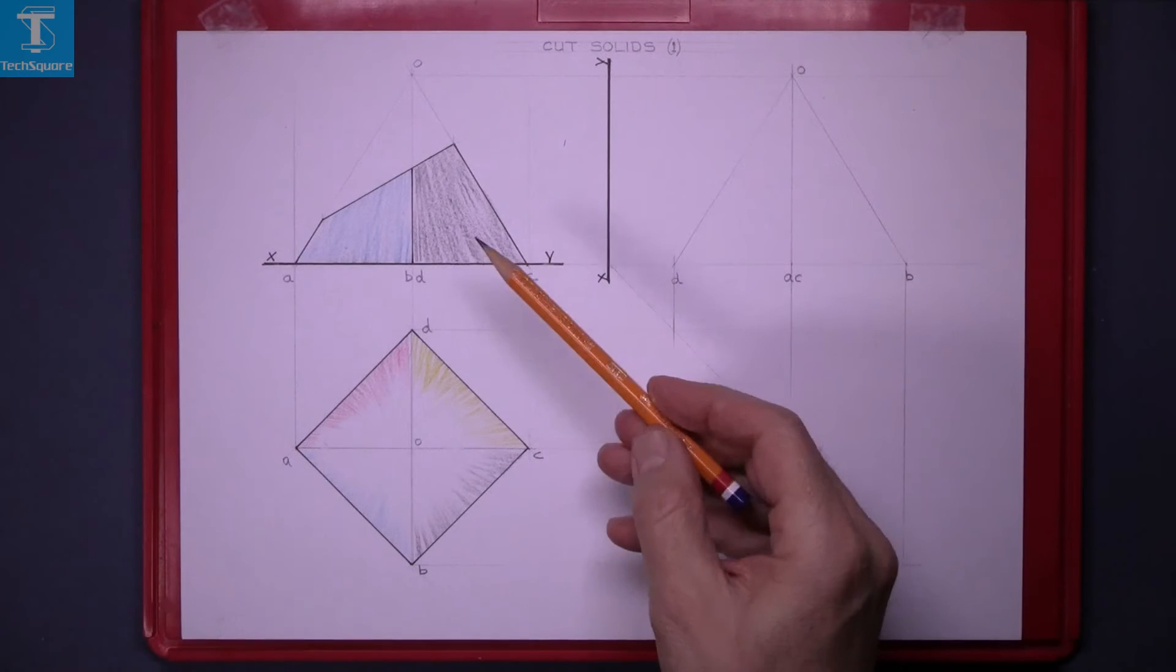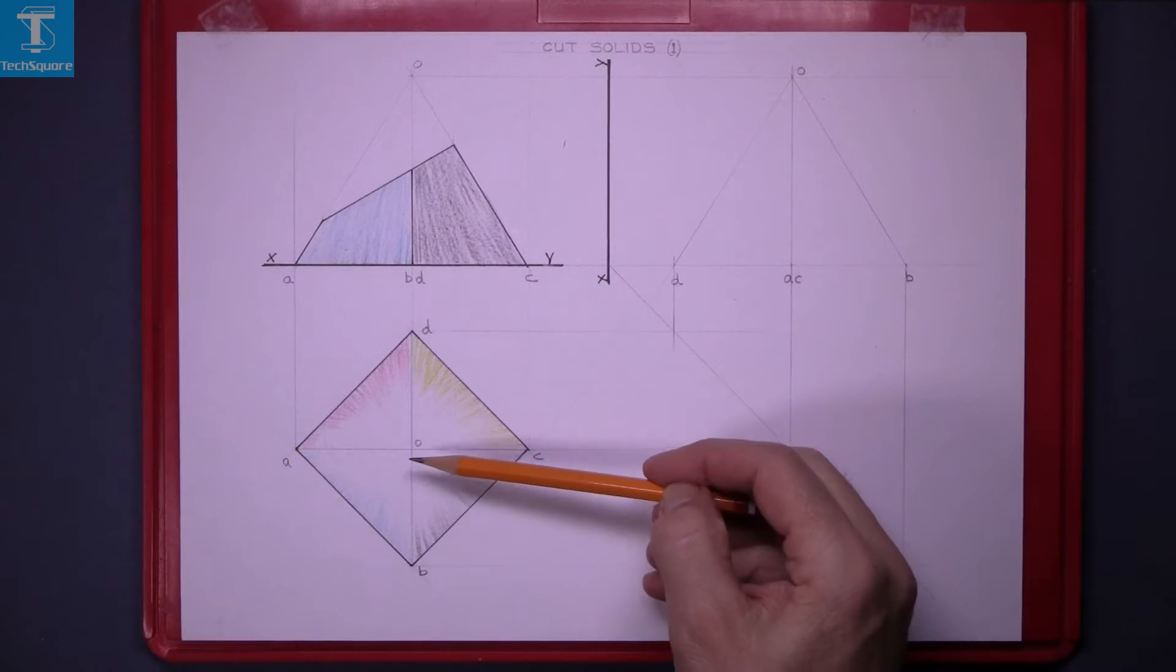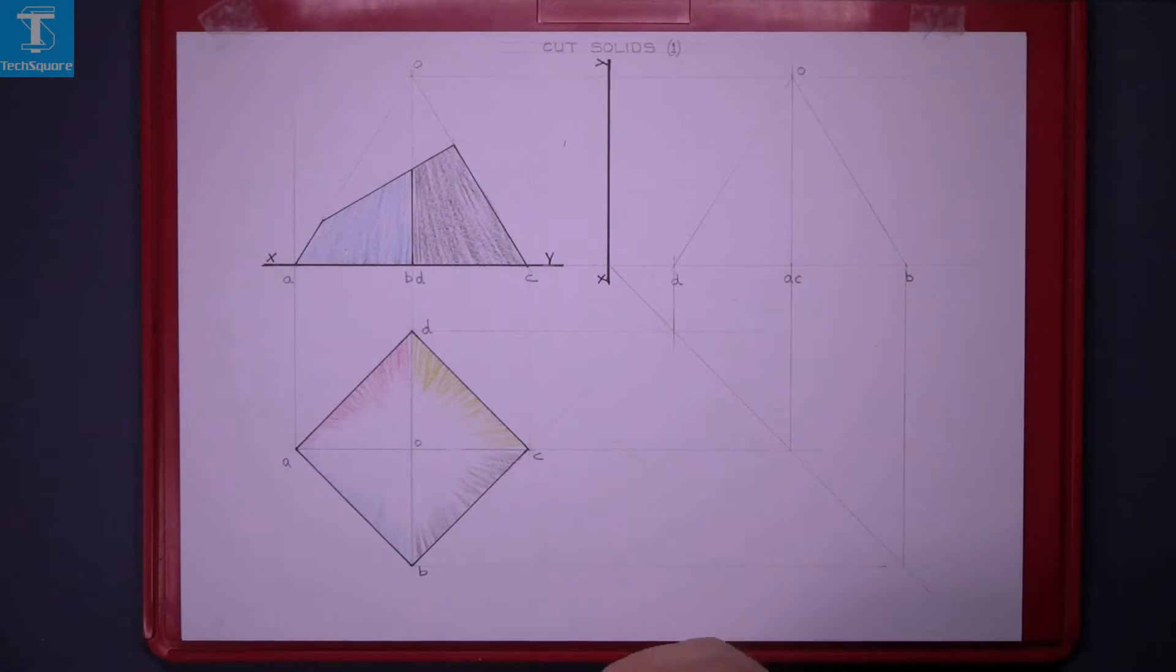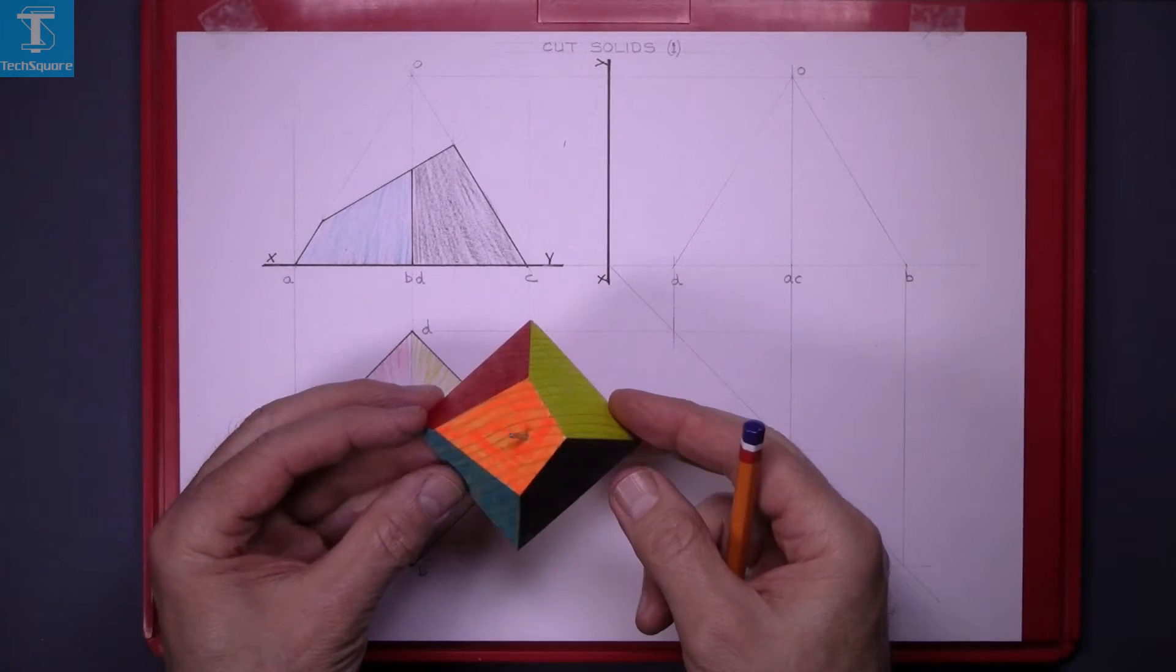Cut solids one. Here we have the elevation and the plan of a pyramid with the top cut off it. This is the solid here.